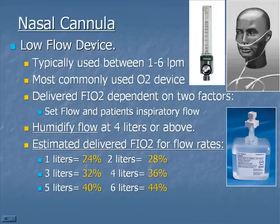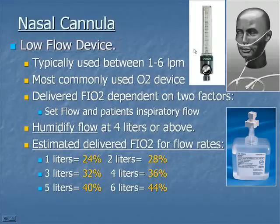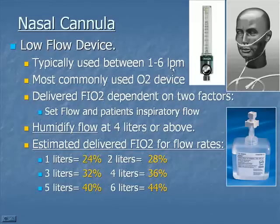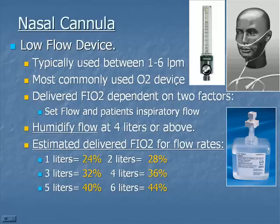The nasal cannula is a low flow device. We typically set the flow somewhere between 1 to 6 liters per minute, though higher flows are possible with high flow cannulas. It's definitely the most commonly used oxygen device — very convenient and rapid. We can provide FiO2 at a low to medium range quickly to the patient. The delivered FiO2 depends on the flow set and the patient's inspiratory flow rate.